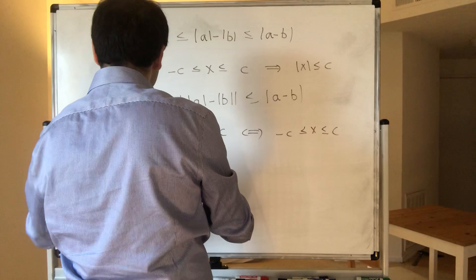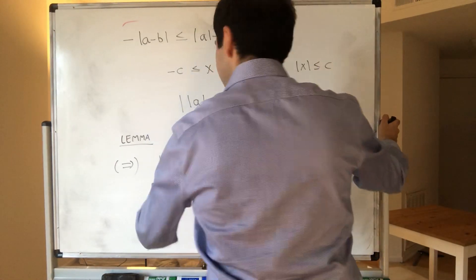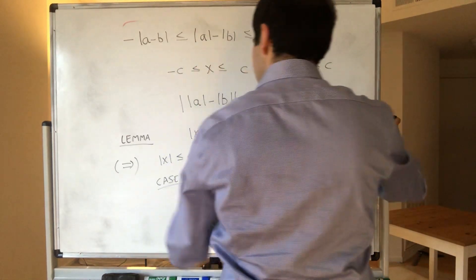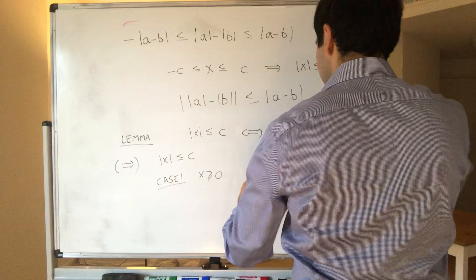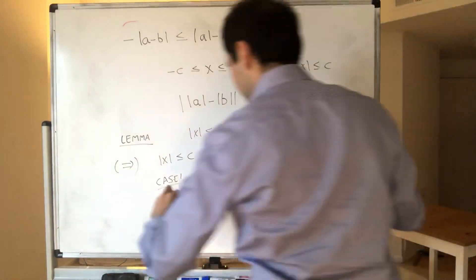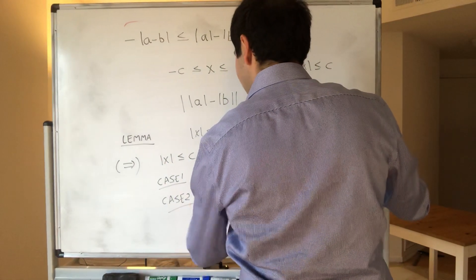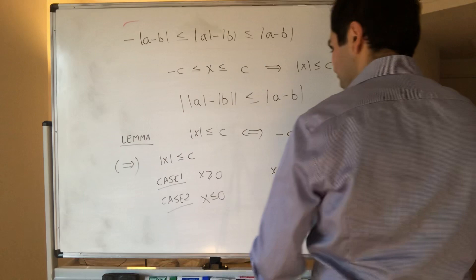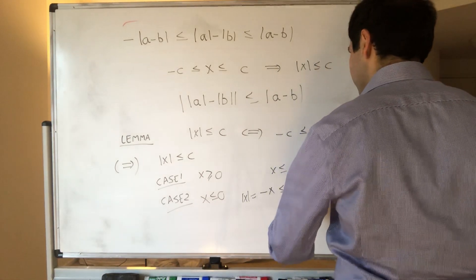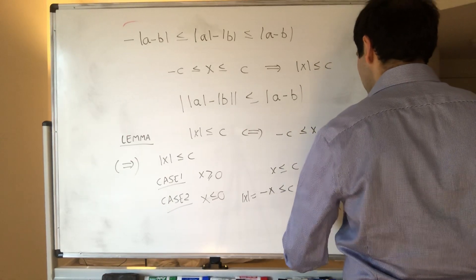Let me prove this in two directions. First direction: we know that absolute value of x is less than or equal to c. In case one, if x is positive, this means x is less than or equal to c, and more generally, x is between minus c and c. In case two, x is negative or non-positive. We know that absolute value of x, which is minus x, is less than or equal to c. So x is greater than or equal to minus c, and in particular x is squeezed between those two bounds.